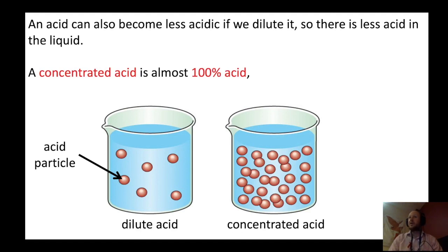So, if we call something a concentrated acid, that is almost 100% acid particles. These are very dangerous, and you won't come across them when you are doing chemistry at key stage 3. But you will come across them when we do chemistry in key stage 4 in year 11. So, be careful.